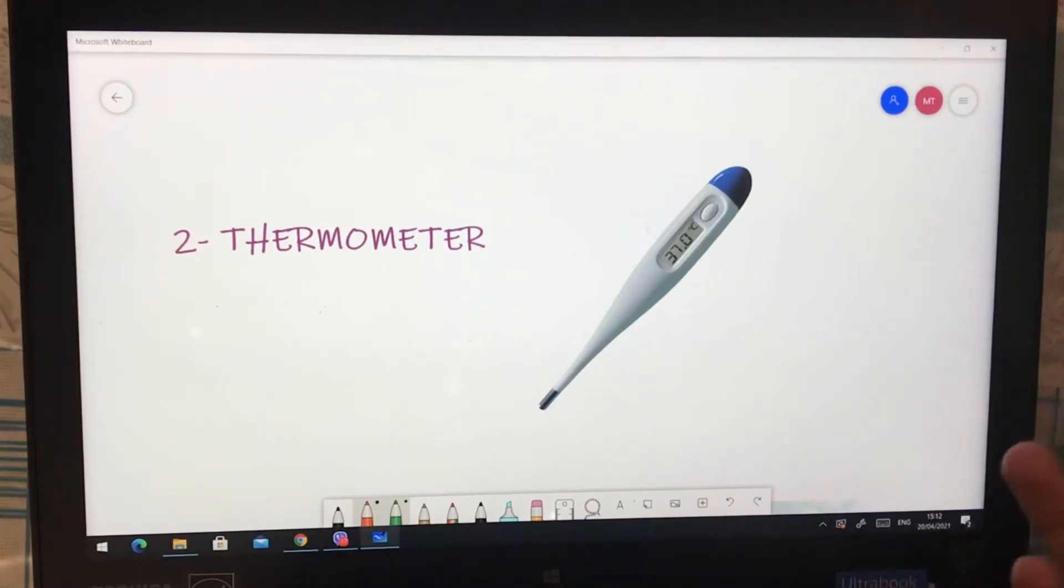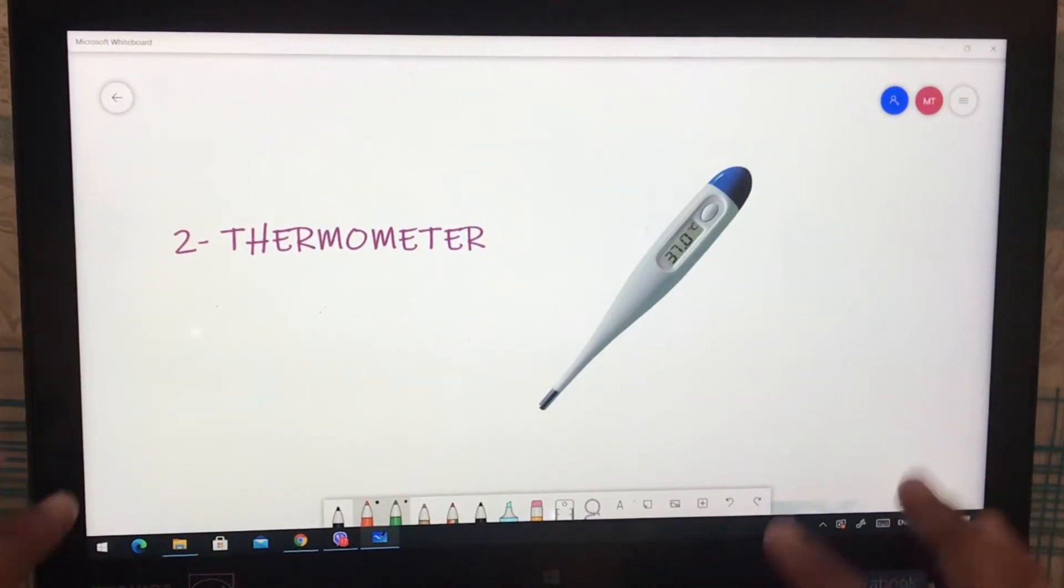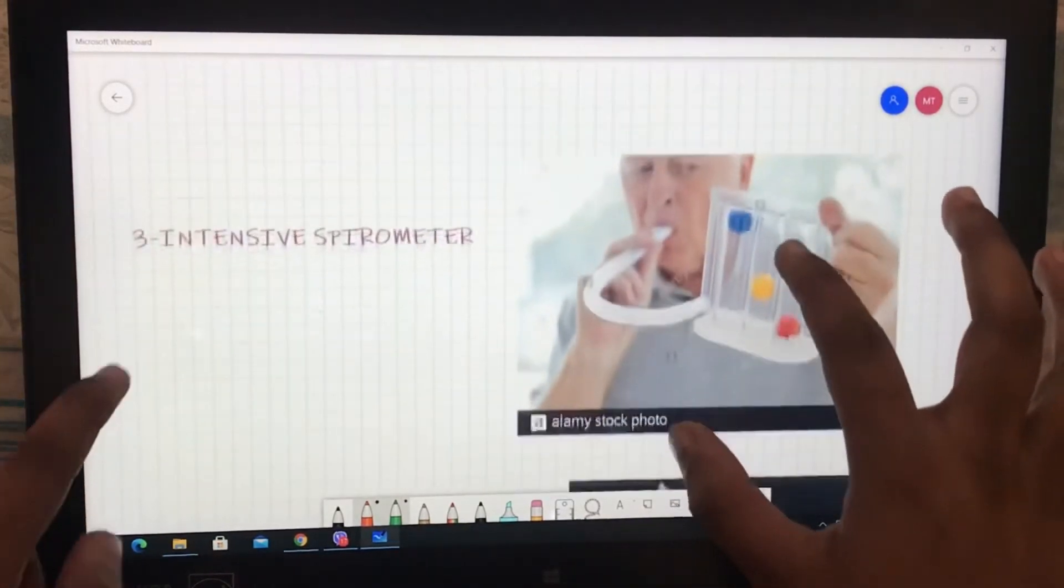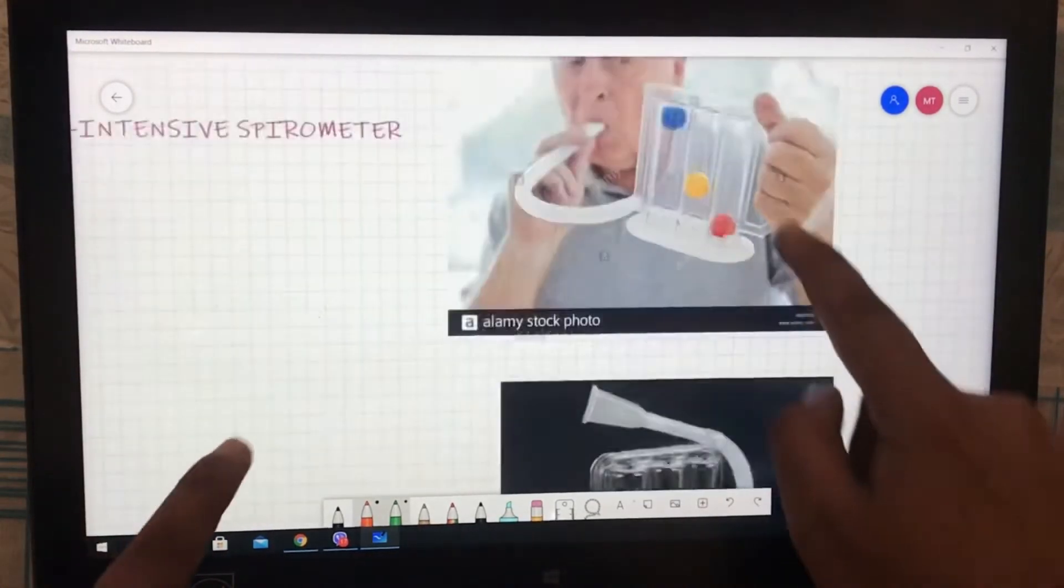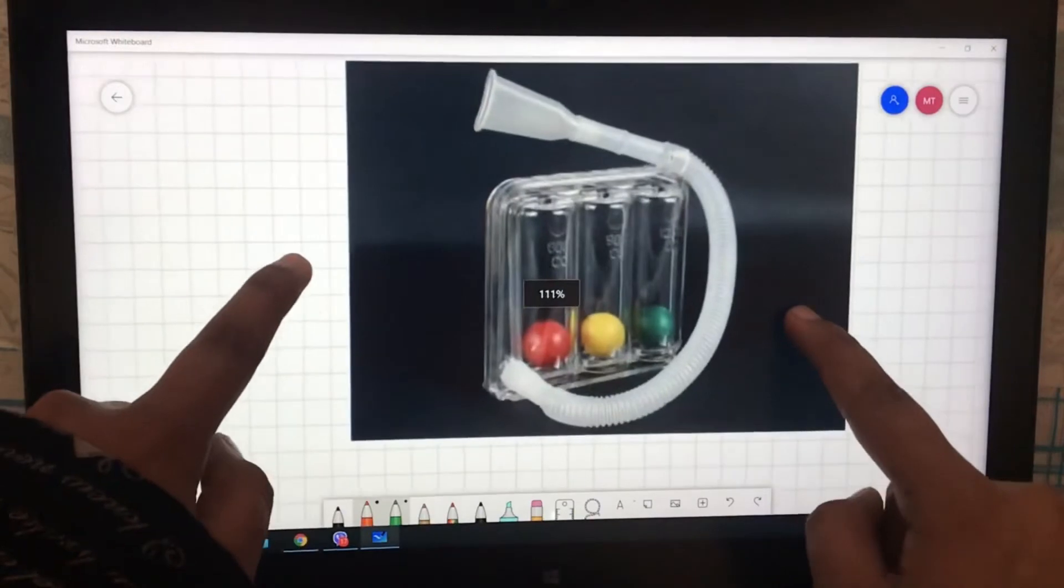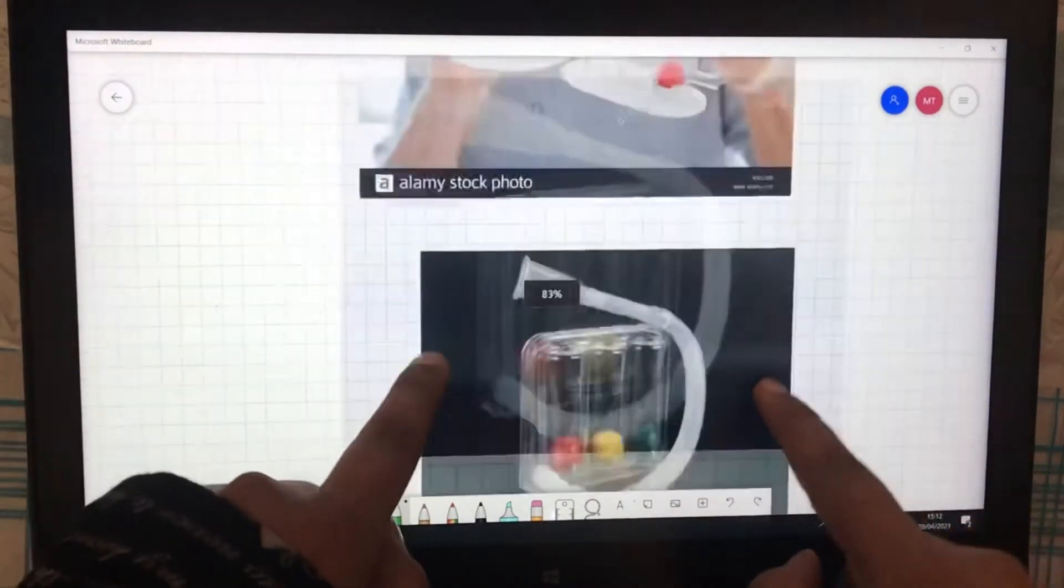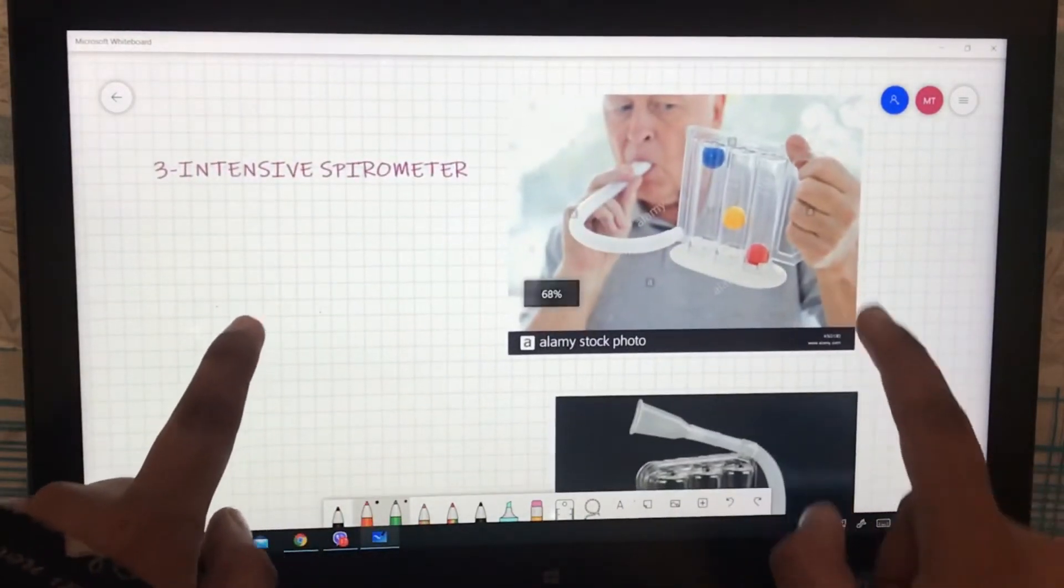The third one is an incentive spirometer, which will help to increase the lung capacity. The device looks like this and it is really very important. And the fourth one we have is a pulse oximeter. I know it's a bit expensive, around 1,400 to 1,500 rupees, but you need it.